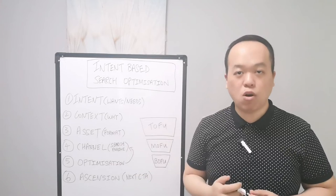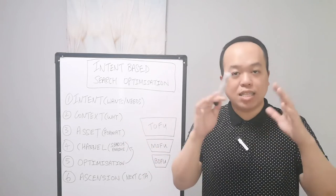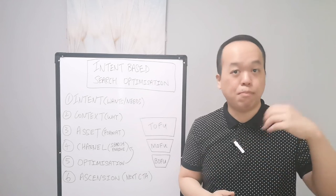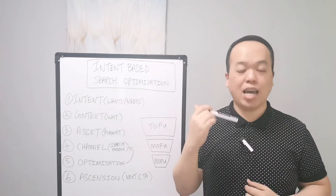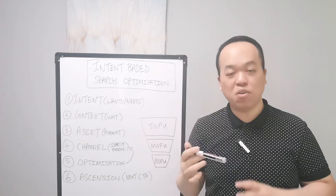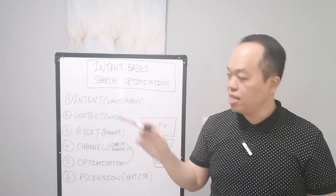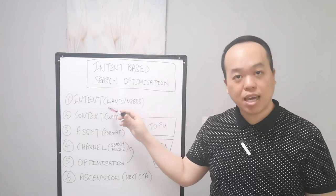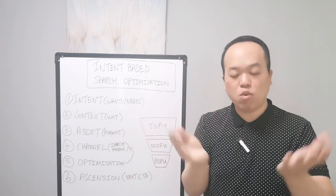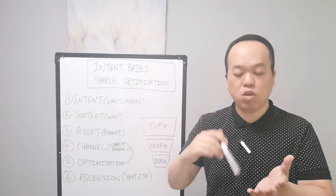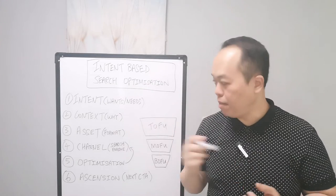The third step is asset access — meaning the format of your content. It can be a blog post, a website, a video, or infographics — it doesn't matter. After you identify the search intent and context, you need to decide on a format before you even launch your SEM campaign.